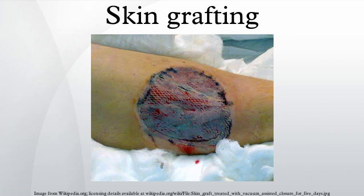The graft is carefully spread on the bare area to be covered and held in place by a few small stitches or surgical staples. The graft is initially nourished by a process called plasmatic imbibition, in which the graft absorbs plasma. New blood vessels begin growing from the recipient area into the transplanted skin within 36 hours in a process called capillary inosculation. To prevent accumulation of fluid under the graft, which can prevent its attachment and revascularization, the graft is frequently meshed by making lengthwise rows of short, interrupted cuts, each a few millimeters long, with each row offset by half a cut length like bricks in a wall.